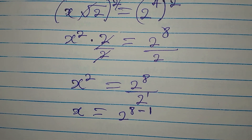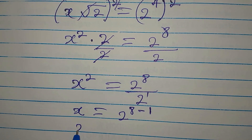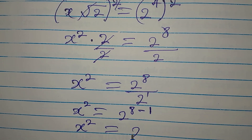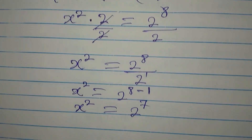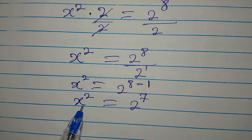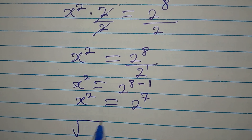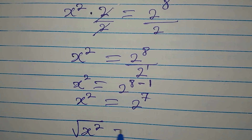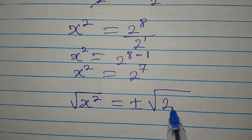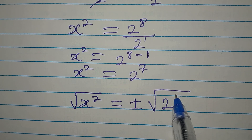So our x squared will now be 2 to the power of 8 minus 1 — since we are dividing, pick one of the bases and subtract the powers. So our x squared will now be 2 to the power of 7. But mind you, we are looking for the value of x, not x squared, so I will square root both sides.